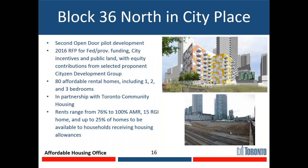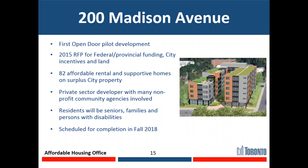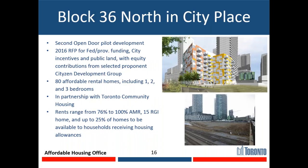The next example is Block 36 North in City Place — another surplus city site that had sat vacant for over 20 years. Rather than selling it, the city ran the RFP and proposed a 50-year lease. The Dominus development group is providing rents in the range of 76% to 100% of AMR. We've also leveraged a portion of the units being funded through the federal-provincial affordable housing program. On page 17, this is a unique project on city surplus land where the developer purchased the land and will deliver 100 affordable ownership homes, including down payment assistance, and 100 rental homes.